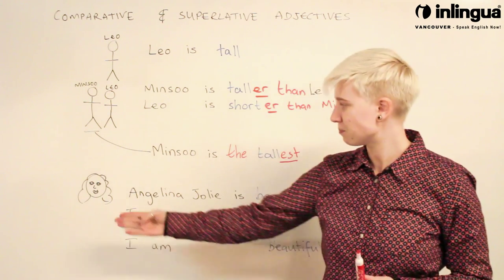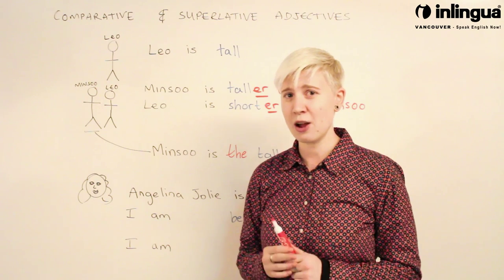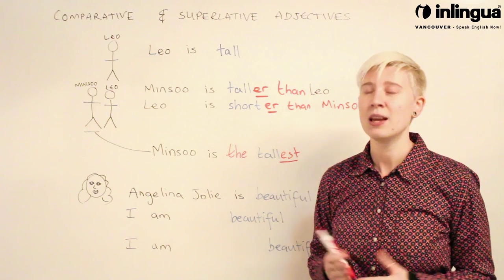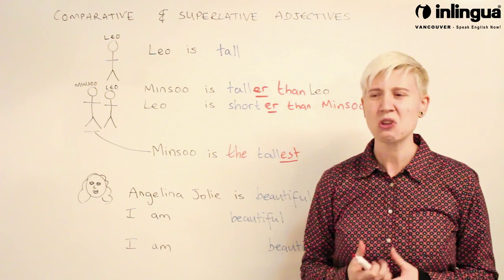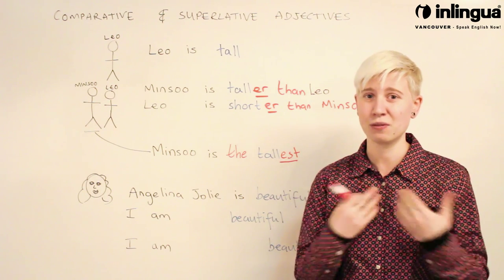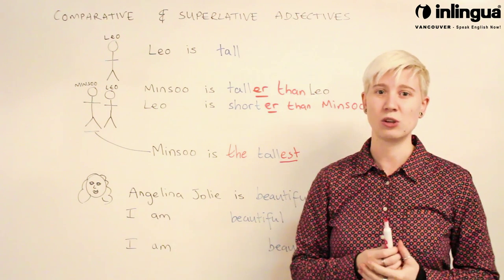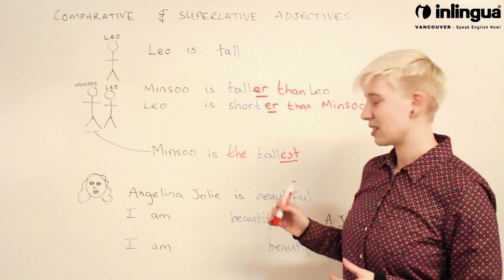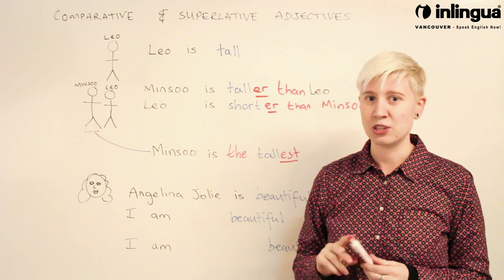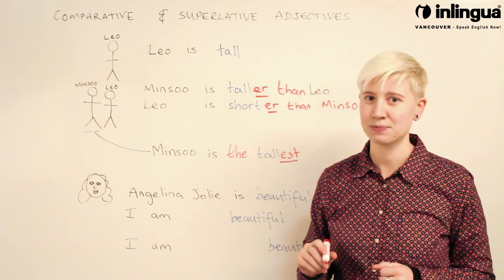Let's have a look at my next example. Here is Angelina Jolie — I'm a very talented artist! I'm going to talk about Angelina Jolie's appearance using the adjective 'beautiful'. Angelina Jolie is beautiful — she's famous for it. But what if I want to compare myself with Angelina Jolie? Just two things, so we'll use a comparative adjective. In this case 'beautiful' is already really long, so we are going to use a different technique — I'm going to add an extra word. Can you guess what it is? More.